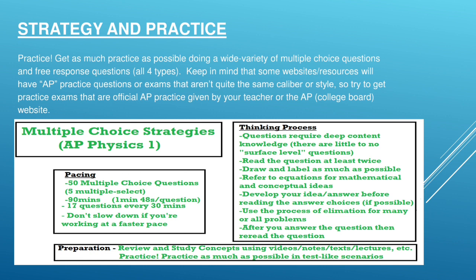What about the multiple choice strategies in AP Physics 1? Pacing. 50 multiple choice questions. 5 multiple select. 90 minutes. So approximately 1 minute and 48 seconds per question. 17 questions every 30 minutes. So do not slow down if you are working at a faster pace.